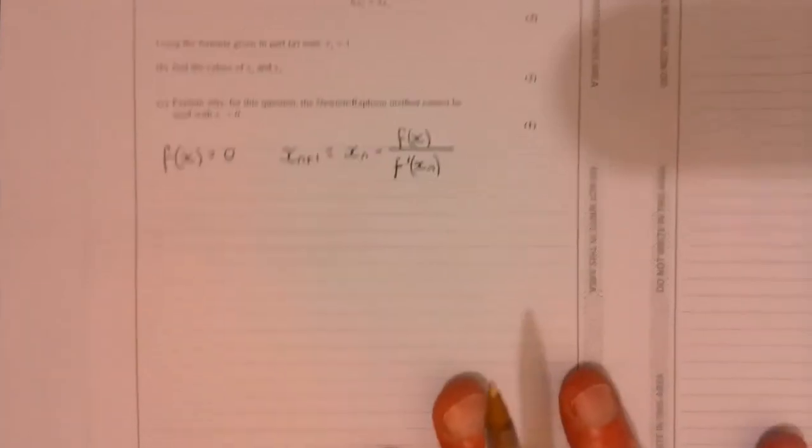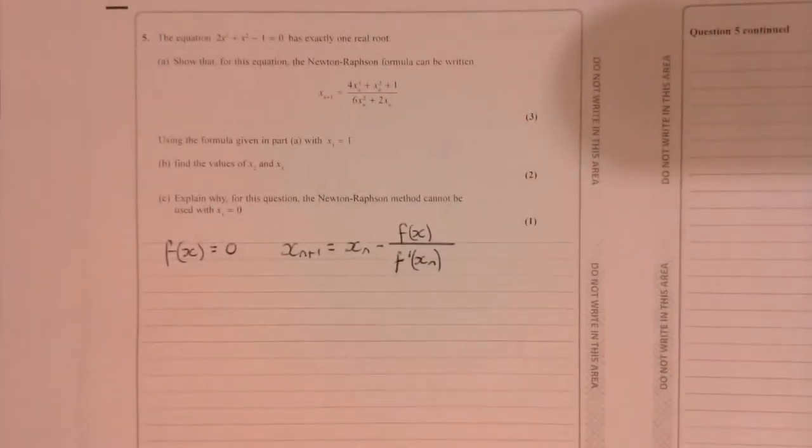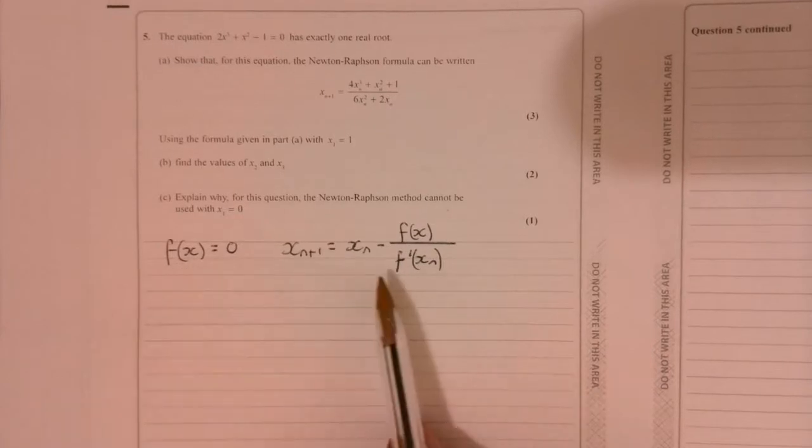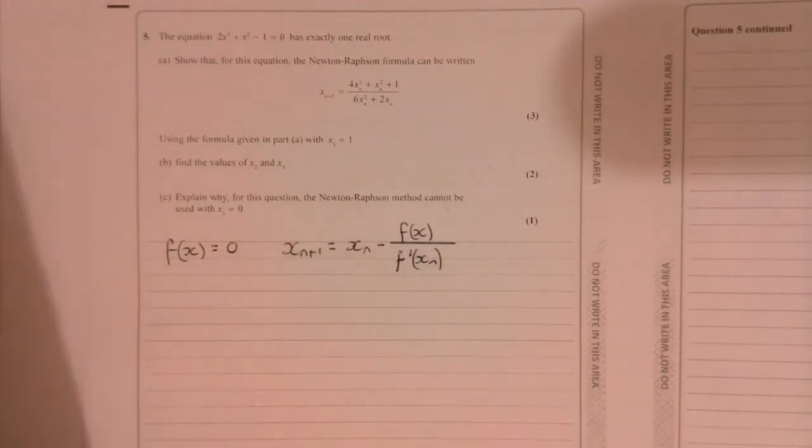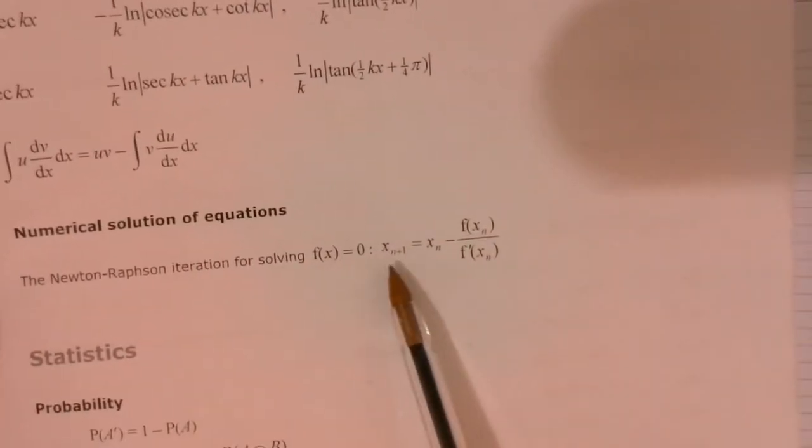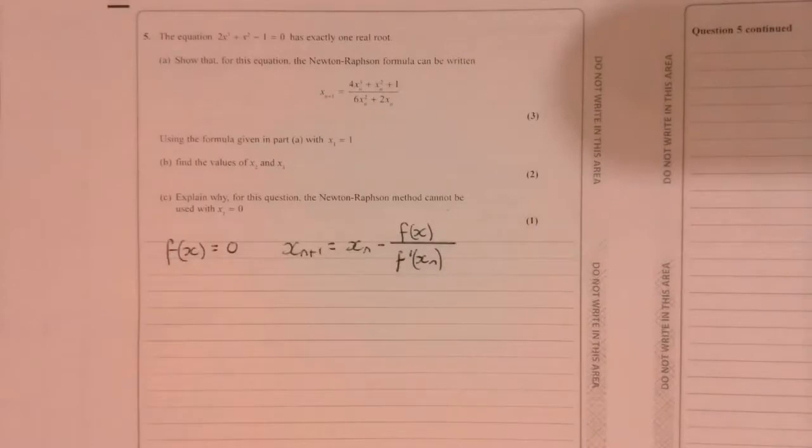Question five. First thing I've done here is I've just written down what's in the formulae book. It tells me about Newton-Raphson. So I've just looked it up. Newton-Raphson, it's in the formulae book. I've just written that down.